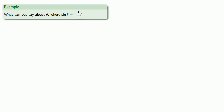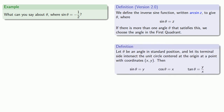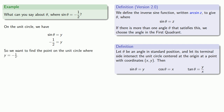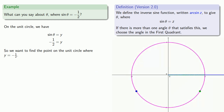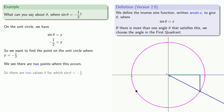What about sine of theta equals minus 1 half? On the unit circle, sine of theta equals y, so y equals minus 1 half. We want to find the point on the unit circle where y equals negative 1 half. We see there are two points: one is a rotation into the third quadrant and another into the fourth quadrant. So we'll pick the angle in the first quadrant — wait, neither of these is in the first quadrant. That means we'll have to modify our definition once again. If there's more than one angle, we choose the angle in the first or fourth quadrant.